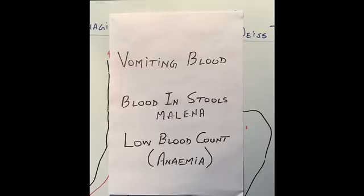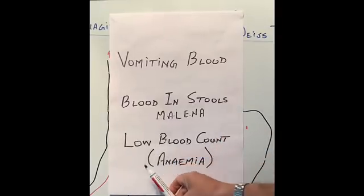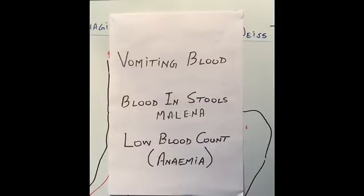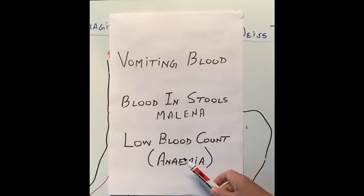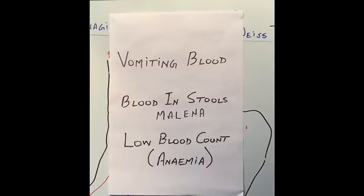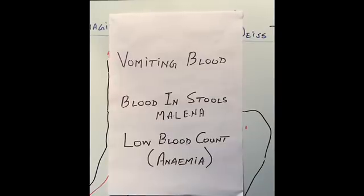Sometimes the bleeding is very subtle — very slow — and happens not over hours or days but over weeks or months. In that case, the patient loses blood very slowly and doesn't see blood coming up from the top end or from the bottom end — stools look normal, no vomiting blood. But constantly losing blood drip by drip causes the blood count to fall, losing red cells. That condition is called anemia. When we lose blood slowly, iron levels in the blood also go down.